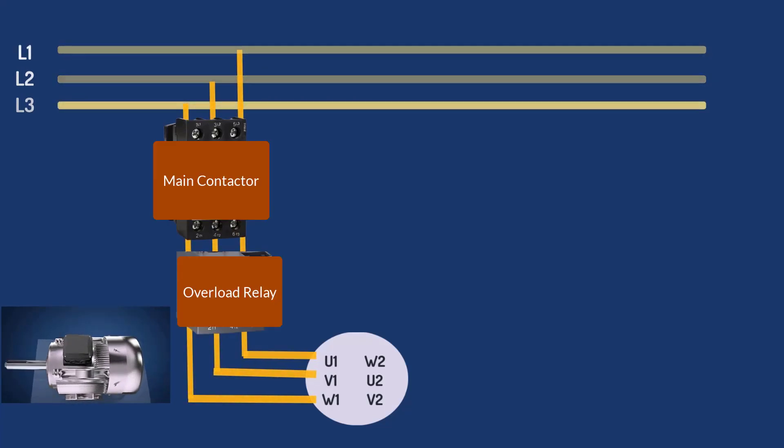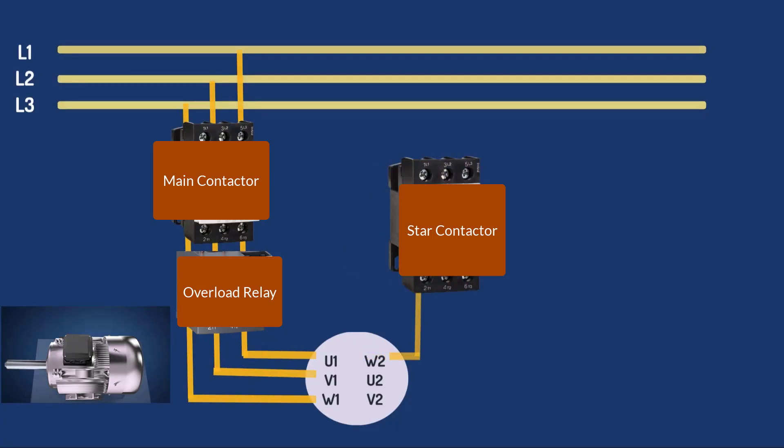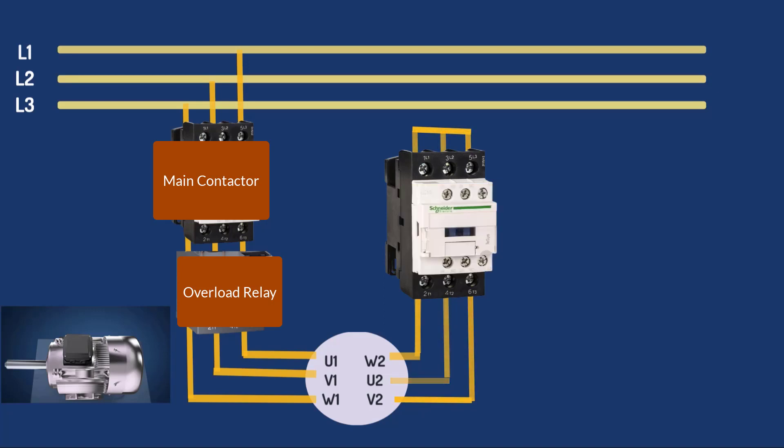Let's understand the star connection. For star motor winding connection, we can add another contactor named star contactor and connect it to W2, U2, V2 terminals of the motor. We will short the other end of the contactor like this. The current in star state is one-third of the current in delta state, hence the contactor rating is one-third of the motor rated current.